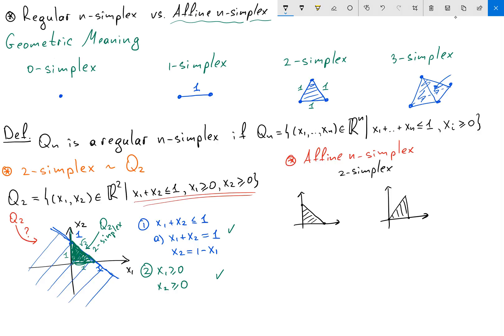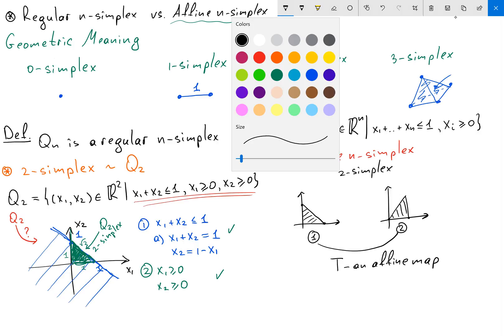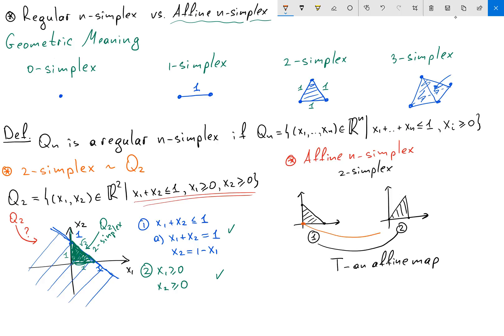But let's say we're given some triangle in R2 that has the following form. So how I can get this triangle from the first one? And I'm saying that again this triangle by some map T when T is an affine map. So in some sense what I'm doing, I'm taking this point and mapping to this point. I'm taking this point, mapping to this point. And I'm taking this point and mapping to this point. So affine n-simplex is the image of regular n-simplex under an affine map.